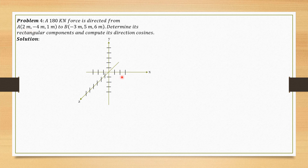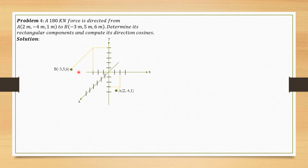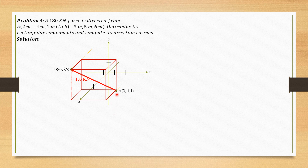First, we have to locate point A at (-4, 1), then point B at (-3, 5, 6), so it should be somewhere here. We form a box with AB as the diagonal so that we can analyze the components. The force is directed forward along Z, upward along Y, and leftward along X. So only the X component is expected negative; both Y and Z components are expected positive.